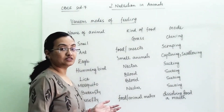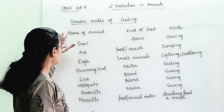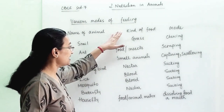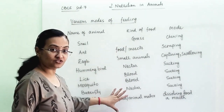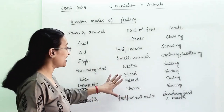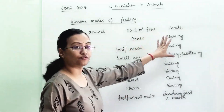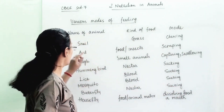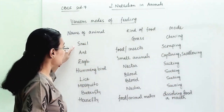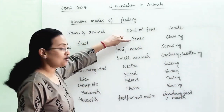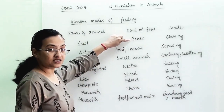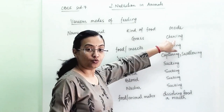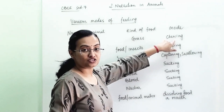Let's understand via example how various animals take various kinds of food and how their modes of feeding are different. So snail — the kind of food snail eats is grass, and the mode of feeding is chewing.